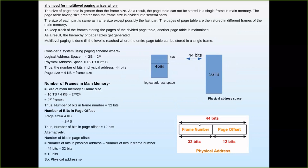So there are 2^32 frames in the physical address space, meaning we need 32 bits to uniquely identify each frame. The number of bits in the page offset: since the page size is 4KB = 2^12, we need 12 bits for the page offset. Together, frame number (32 bits) and page offset (12 bits) give 44 bits to uniquely identify an address in the 16TB physical memory.